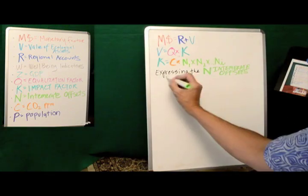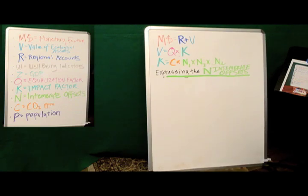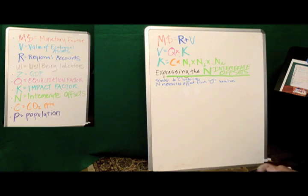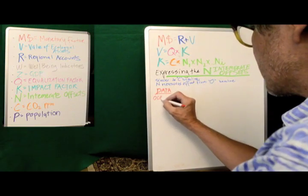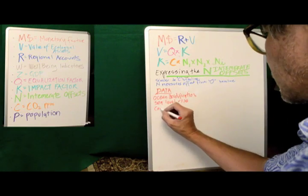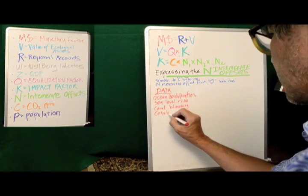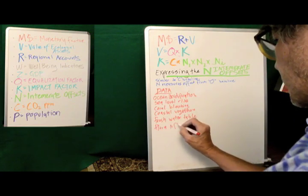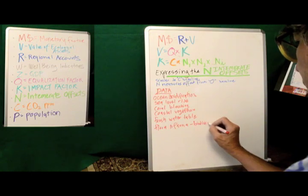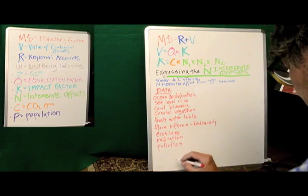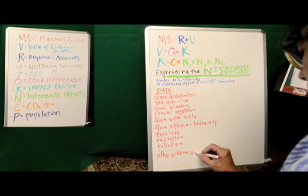Now, when we include our Intemarate offsets, it is measured similarly to the carbon baselines in that what N measures are the offsets from what we attribute as being a kind of zero baseline. Now, what is needed is data. We need data for ocean acidification, sea level rise, coral bleaching, coastal vegetation, the freshwater table, flora and fauna biodiversity, erosion, radiation, pollution, and other extreme events like an oil spill.